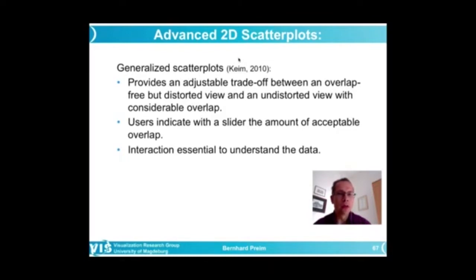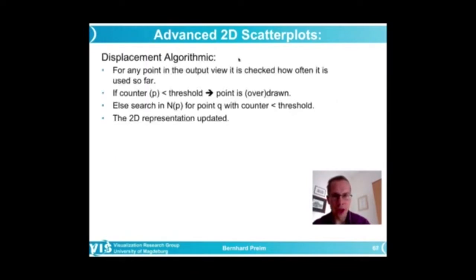That means overplotting occurs, and which tradeoff is acceptable could be decided by the user. For example, he could have a slider available to indicate whether he is primarily interested in an undistorted view or he is primarily interested in avoiding overplotting. And probably it's a good idea to look at different representations where different amounts of overlapping are adjusted.